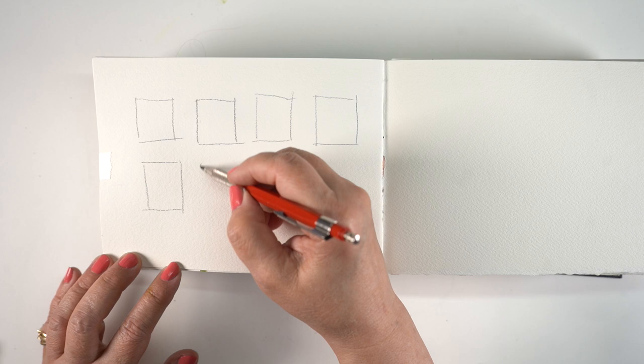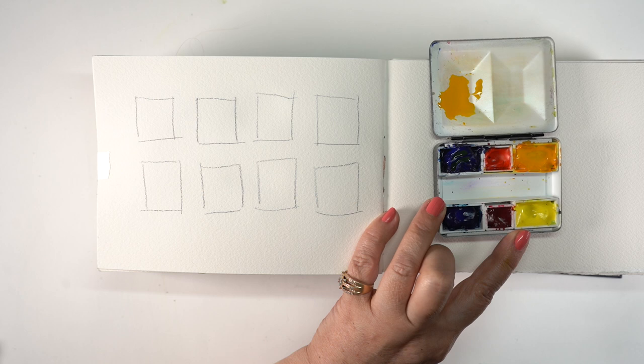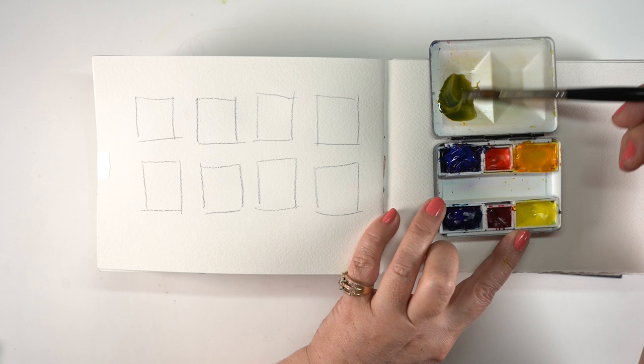In my teaching palette that has the Daniel Smith Six Essentials in it, I've got the three warms on top and the three cools on bottom. I'm going to use the warm with the warm first, the warm blue and the warm yellow, and I get a warm green.